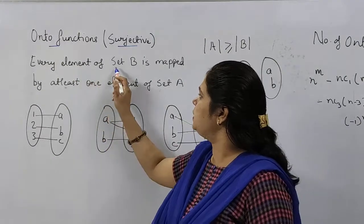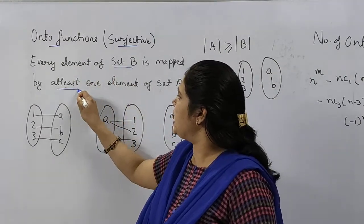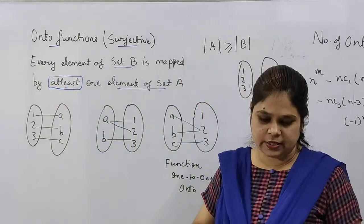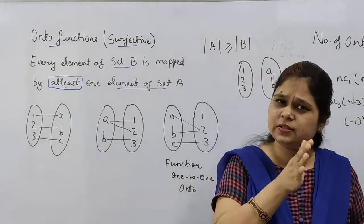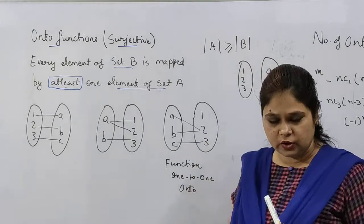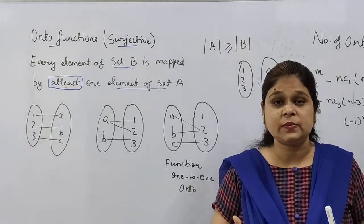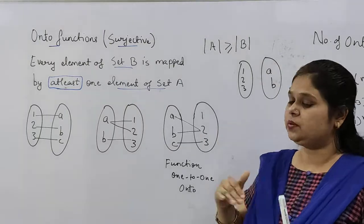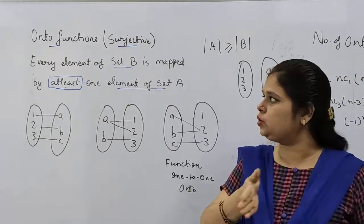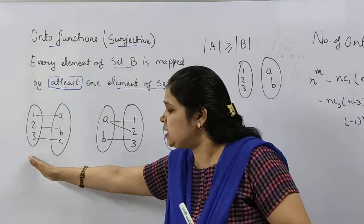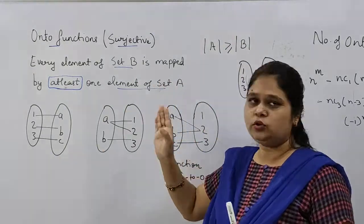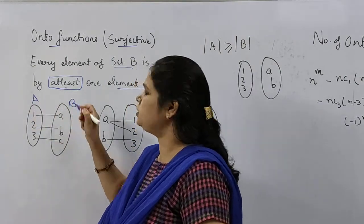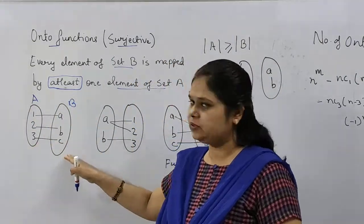Next thing is, every element of set B is mapped by at least one element of set A. So basically we can say, this is the reverse of one to one function. In previous function, we were doing mapping A to B. In this onto function, we will see the mapping from B to A. So let us see how this is going to be happening. Suppose I am taking this function.